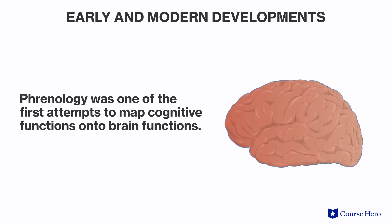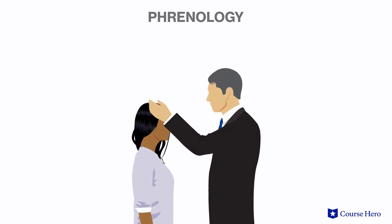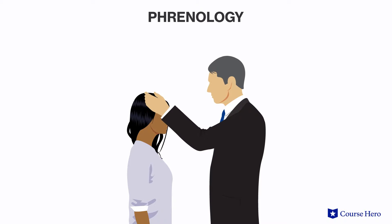This led to phrenology, one of the first attempts to map cognitive functions onto brain structures. It involved feeling the skull and then attributing the bumps and valleys to mental faculties and character traits. While this particular technique has been discredited, the idea that we can map function onto structure has not.